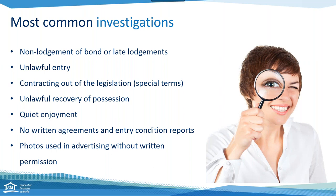Landlords and real estate agents should be mindful to only ever claim the bond amount they're entitled to. If you're seeking to claim only a portion, make sure the undisputed amount is released to the tenant. For example, if you hold a $2,000 bond and want to claim a small amount for rent or cleaning, only claim an estimate of what you need. If you don't need the whole bond, you should not be claiming the whole bond.